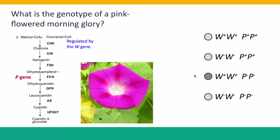A pink flowered morning glory is going to have wild type alleles of the W locus and mutant alleles of the P locus. There are two ways to get to this answer. The first is that unless you're given specific information to the contrary, you should generally assume that any organism you're considering has wild type alleles. You should always start with that and only discard that assumption if the information you're given makes you think otherwise.